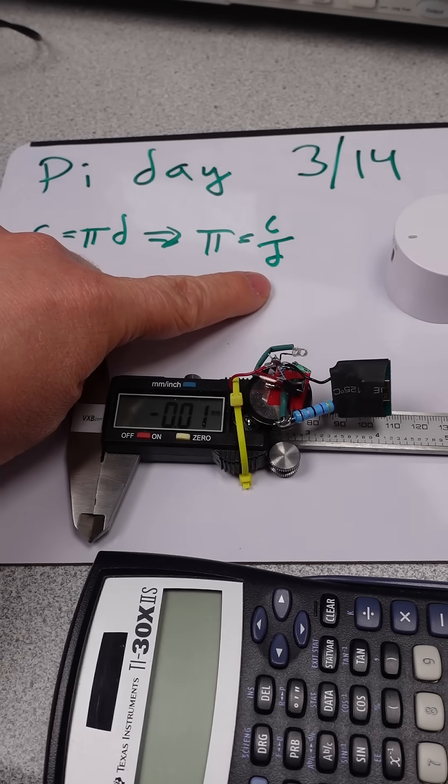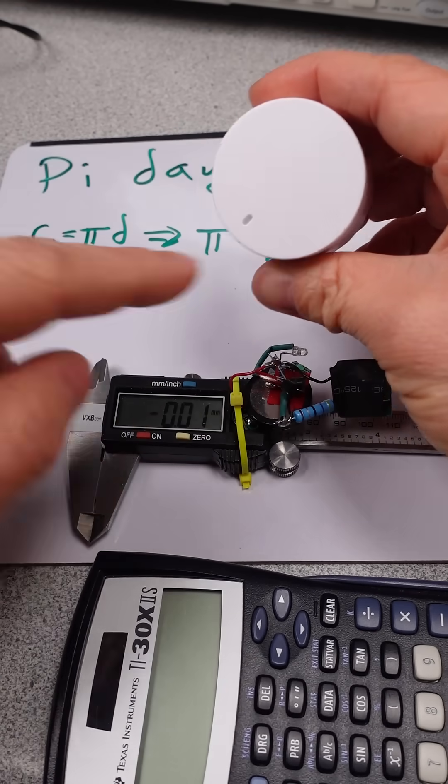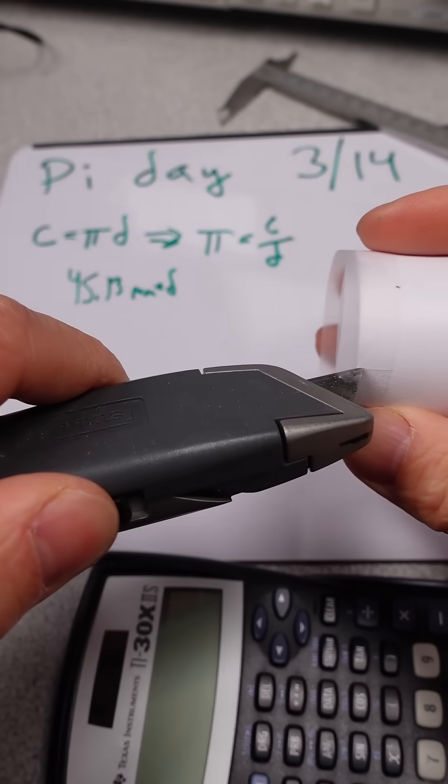Rearranging the formula, circumference equals pi times diameter. Pi equals circumference divided by diameter. The diameter measures about 45 millimeters.